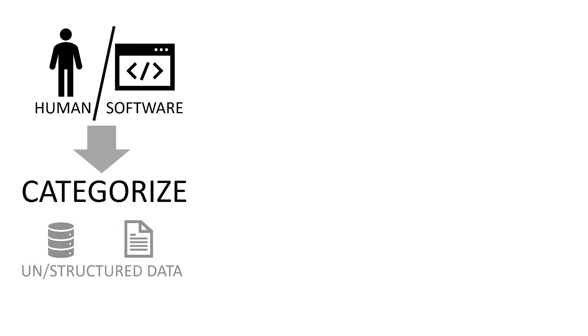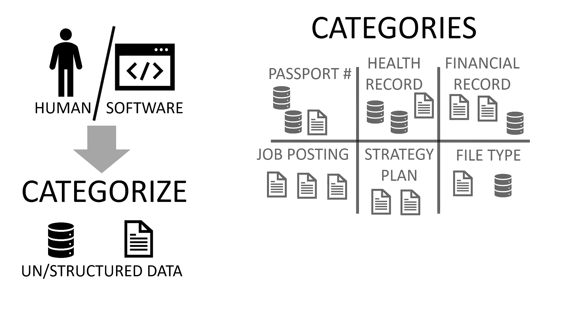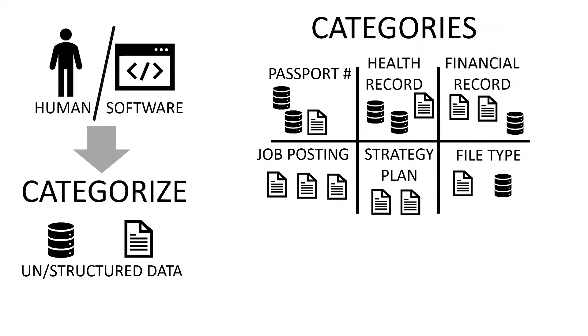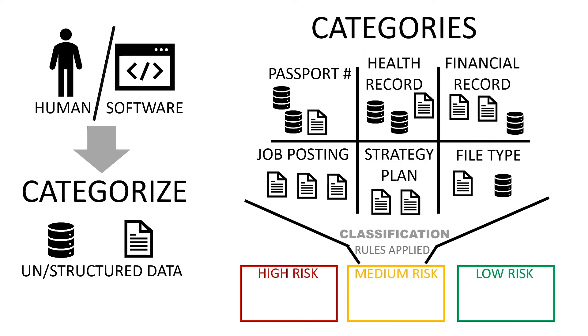Now let's explore the relationship between data classification and data categorization. Usually a human or even software would first categorize the data. The category the data belongs to is selected — such as passport number, health record, financial record, job posting, strategy plan, a type of document, a type of file, and so forth. There are many different ways we could categorize our data for different purposes. Think of it as many different ways of slicing and dicing your data. Once that's done, a different process kicks in and assigns the applicable sensitivity level based on some predetermined rules.